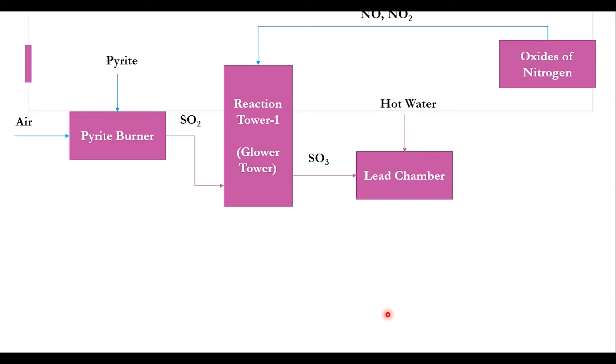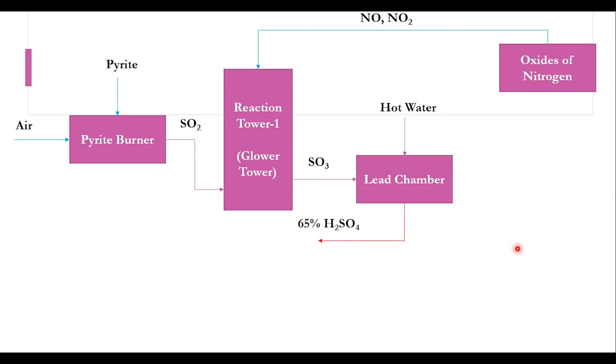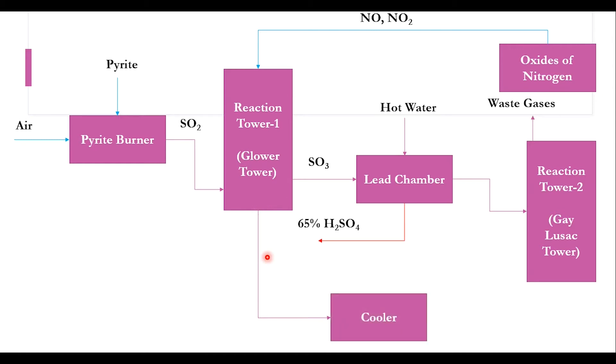The produced SO3 is sent to the lead chamber where by means of hot water or steam, sulfuric acid is produced at 65% purity. The gas from the lead chamber is sent to the second tower, reaction tower two, the Gay-Lussac tower. Waste gases are released from this process, while the product from reaction tower one is first cooled down by cooling water.